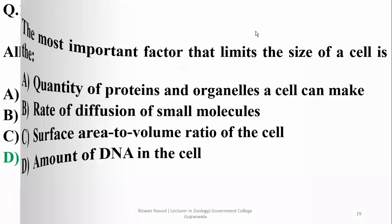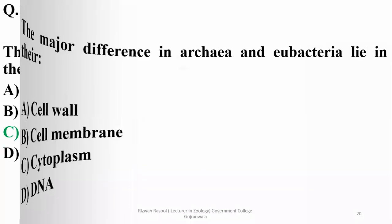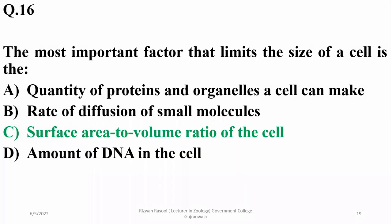Question 16: The most important factor that limits the size of a cell is the surface area to volume ratio. As cell size increases, this ratio is affected, impacting the exchange of substances. The exchange rate becomes limiting. Right option is surface area to volume ratio.